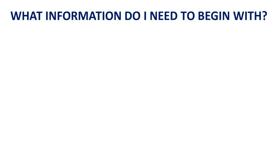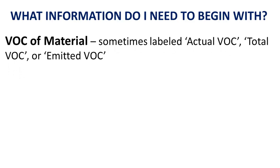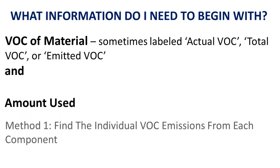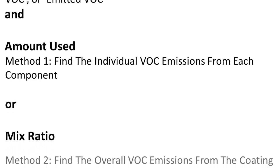Let's first discuss what information we'll need to calculate VOC emissions. You'll need the VOC of material — sometimes labeled actual VOC, total VOC, or emitted VOC. For the first method, you need the amount used of each component. Or, for method two, you'll need the mix ratio of the components of the coating.